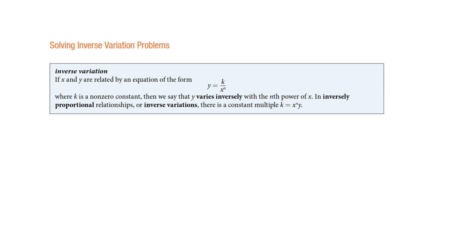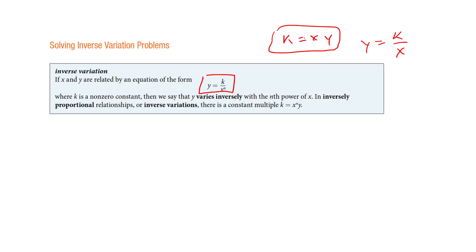That was direct variation. Inverse variation works like this: I have some constant — if this constant is going to stay the same, when y goes up x would have to go down, and if x goes up y would have to go down. They're varying inversely; one goes in one direction, the other has to go the other direction. If you turn this into a formula, you get y equals k over x — x is in the denominator, like a reciprocal. The root of it lies in the equation where the constant equals x times y.